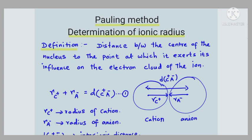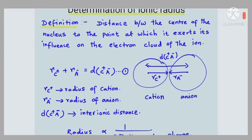Good morning. In this video I am going to discuss determination of ionic radius by Pauling's method. It is a very important topic. Ionic radius is the distance between the center of the nucleus to the point at which the nucleus exerts its influence on the electron cloud of the ion — the distance till which the nucleus can exert its force of attraction over the electron cloud.